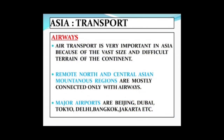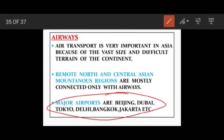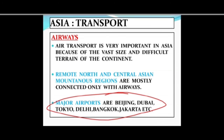Air transport is very important in Asia because of the vast size of the continent and the difficult mountainous terrain, especially in the central portion. Remote northern and central Asian mountainous regions are mostly connected only by airways, as many areas have no roads or railways due to the uneven terrain. Major airports include Beijing, Dubai, Tokyo, Delhi, Bangkok and Jakarta.